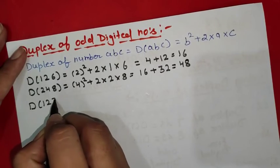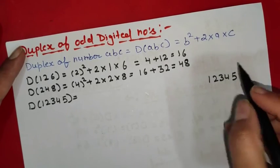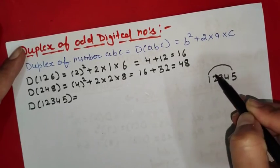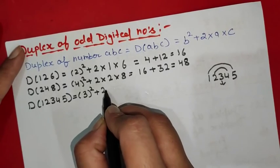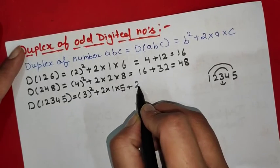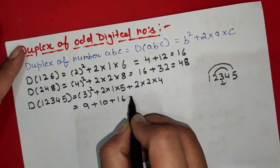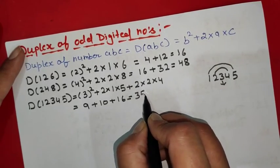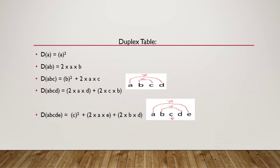For a five-digit number 12345, we use the middle term plus the rainbow pattern: 3² + 2×1×5 + 2×2×4 = 9 + 10 + 16 = 35. So the duplex of 12345 is 35. Here is a list of duplexes of different numbers. The use of duplex numbers in finding squares is discussed in part 6.4 — the link is in the description box. Thank you for watching.